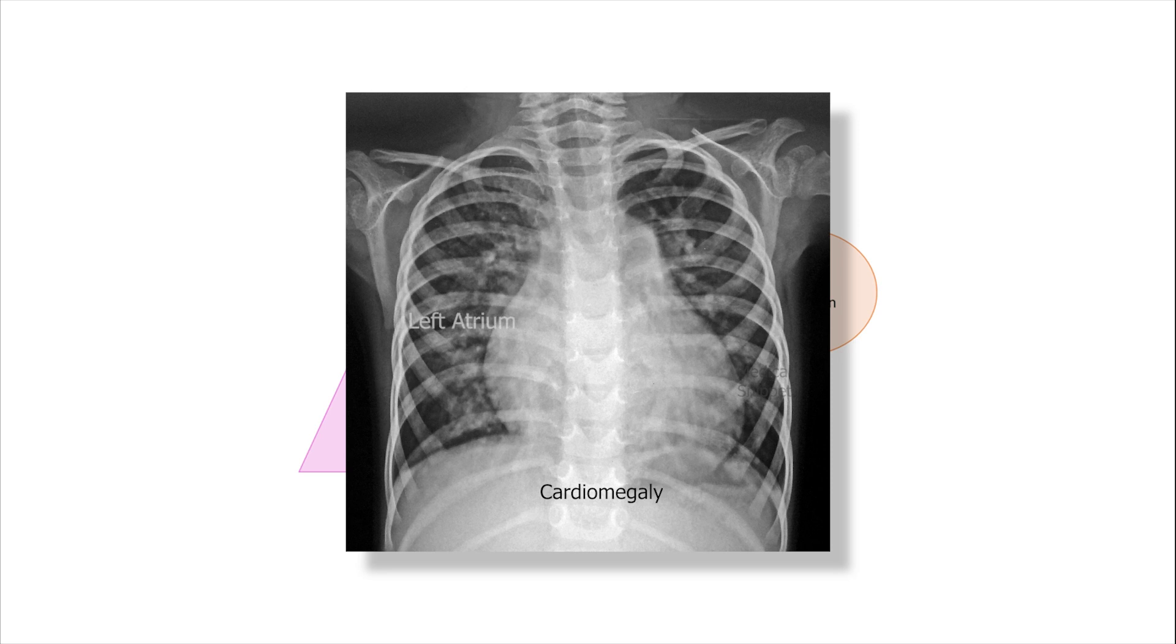In moderate to large PDA, there is cardiomegaly. Left atrium is enlarged. Left ventricle is dilated and forms the apex. There is prominent pulmonary artery with increased pulmonary vascular markings.